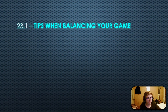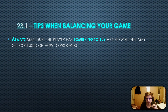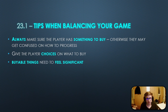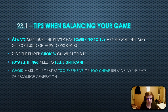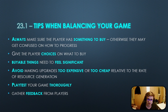Now that you know what balance is, I'm going to give you a few tips when balancing your game. The first one is to always make sure the player has something to buy, otherwise they get confused on how to progress, and this is very important because the player doesn't know when the game will finish. Another tip is to give the player choices on what to buy. Make sure that viable things feel significant as well, and avoid making upgrades too expensive or too cheap relative to the rate of resource generation. You also want to playtest your game thoroughly and gather feedback from players, because they are sort of your guiding light when balancing your game.